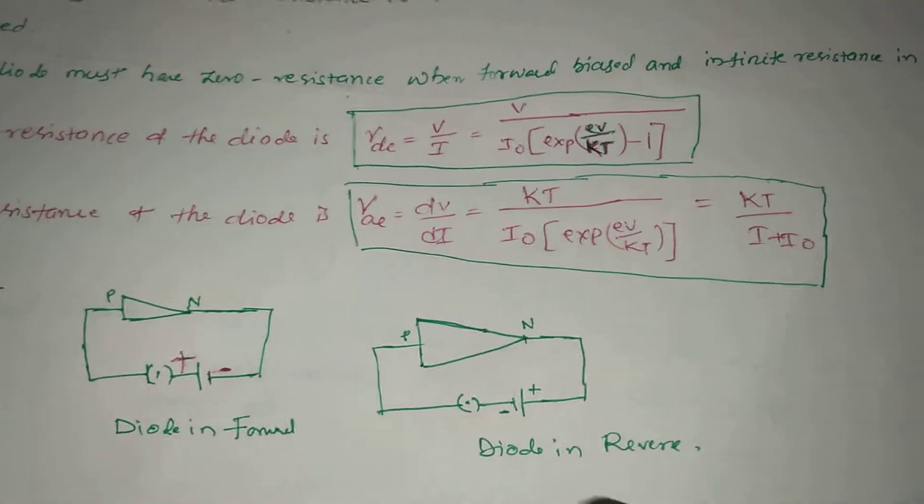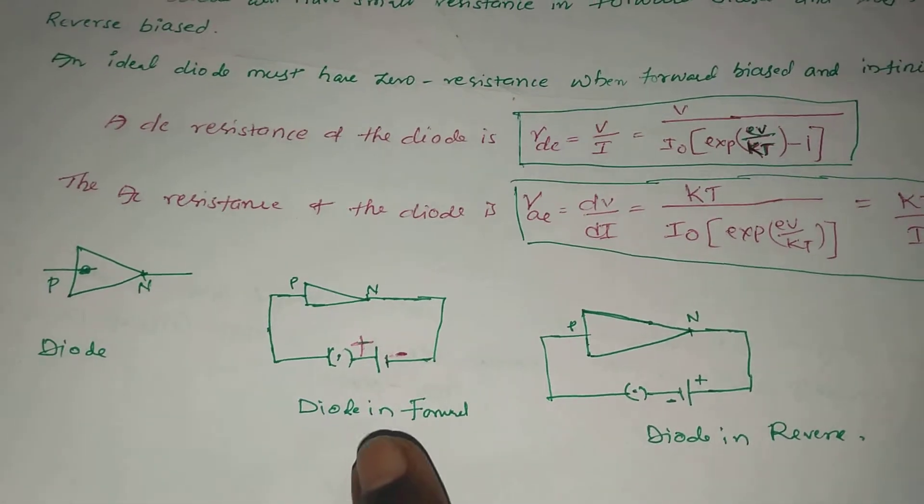the P-type material is connected to battery negative terminal and N is connected to the battery positive terminal. This is reverse bias, this is forward bias, this is the diode symbol.